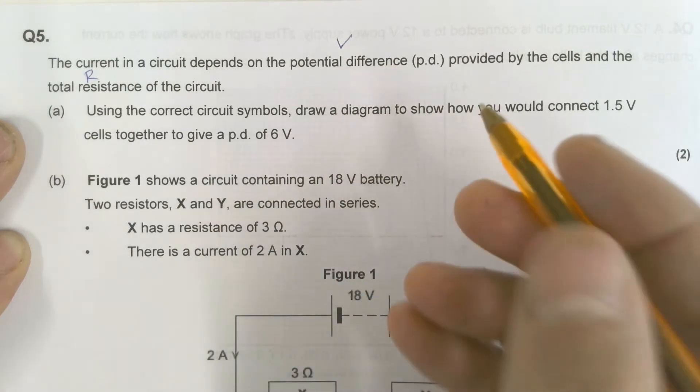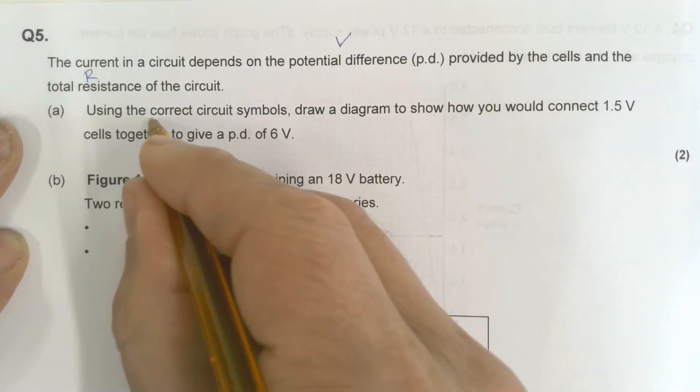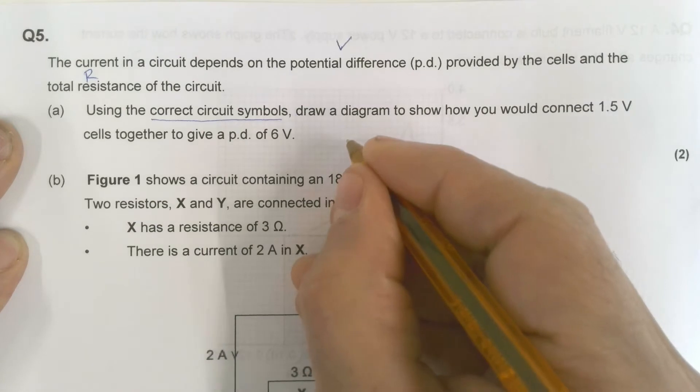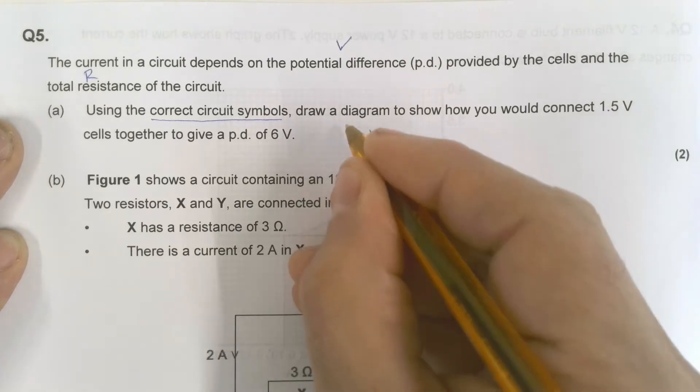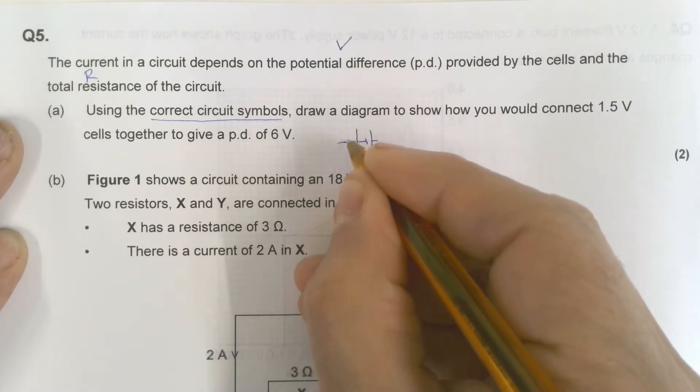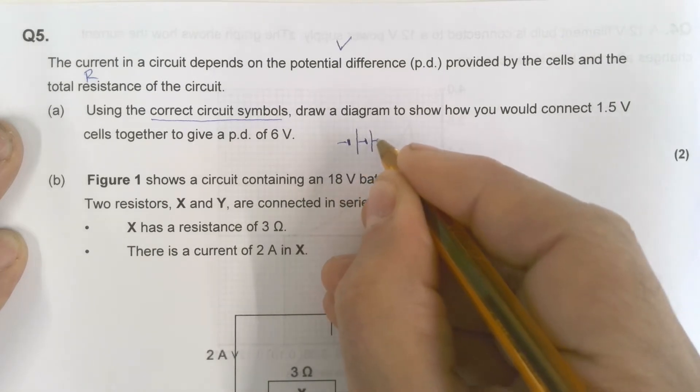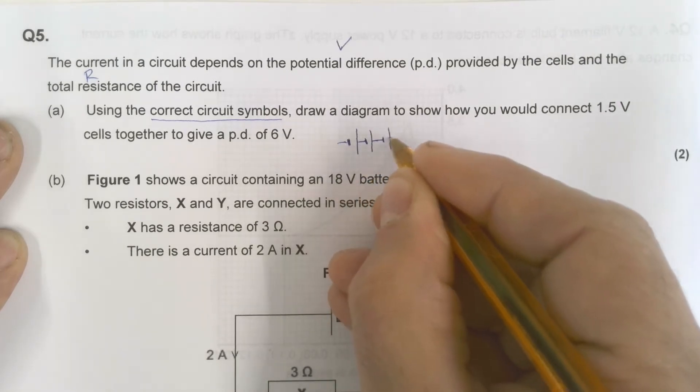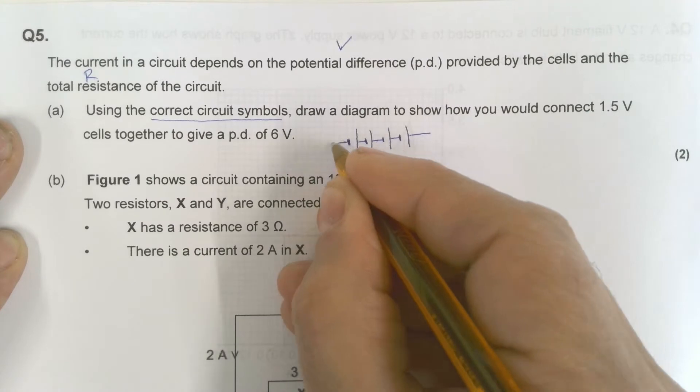Okay, so this is actually a very easy one I would suggest. Using circuit symbols, correct circuit symbols. So there's 1, 2, so there's 1.5. 1.5, that's a total of 3. 1.5, 4.5, that takes me to a total of 4.5.